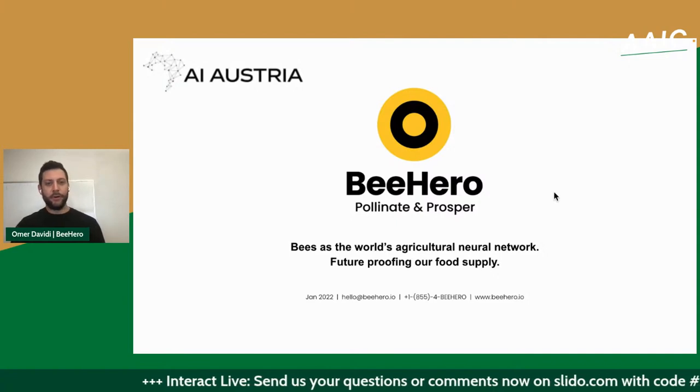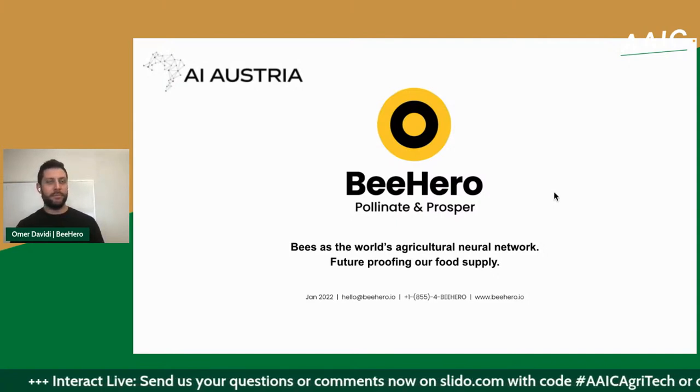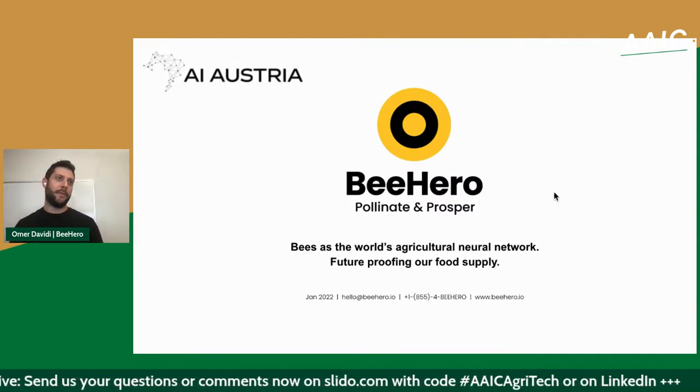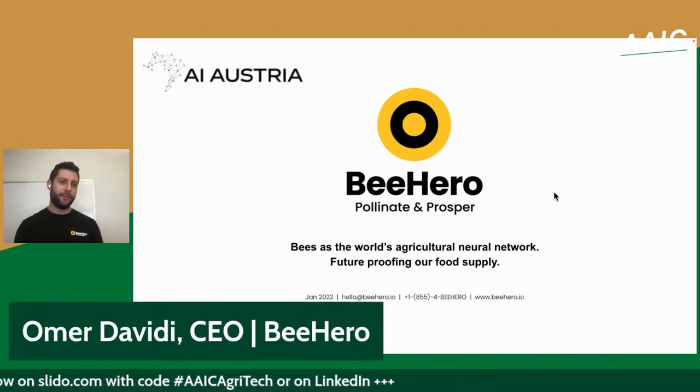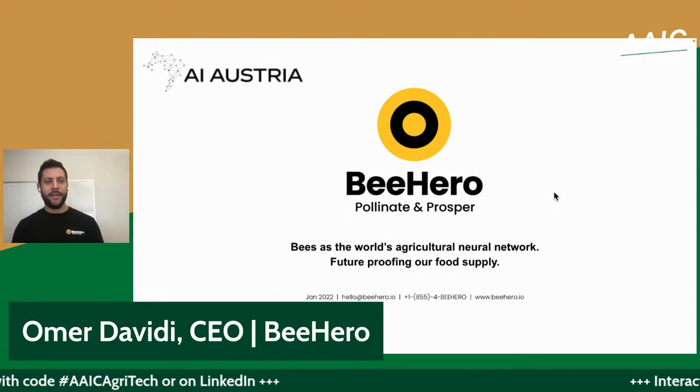Maybe just to mention before we start: we tend to think of bees mostly in terms of honey, but bees are actually responsible for pollinating pretty much everything we eat. This is part of what I'm going to touch on when we talk about how artificial intelligence and machine learning can help address some of the main concerns of our food production in the coming years.